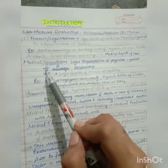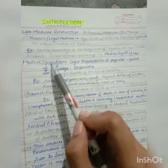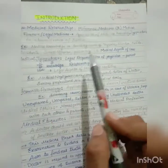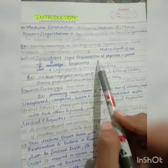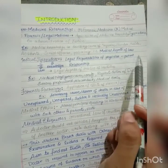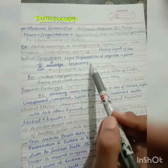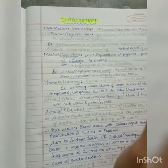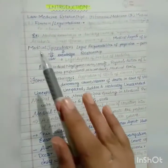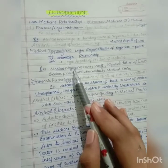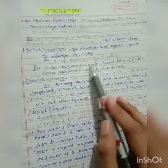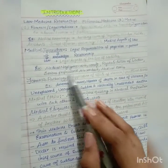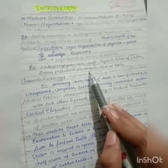Medical jurisprudence: 'juris' means law and 'prudence' means knowledge. So it is the legal responsibilities of the physician, including the doctor-patient relationship and the legal aspects of the practice of medicine. Examples include medical negligence cases, consent, rights and duties of the doctor, serious professional misconduct, and medical ethics.